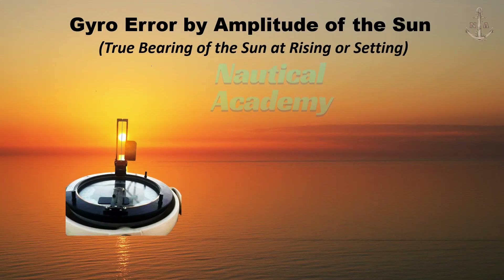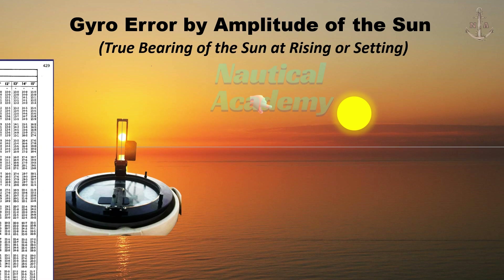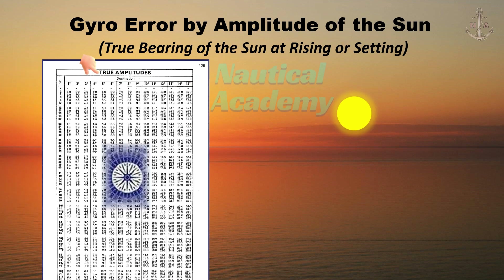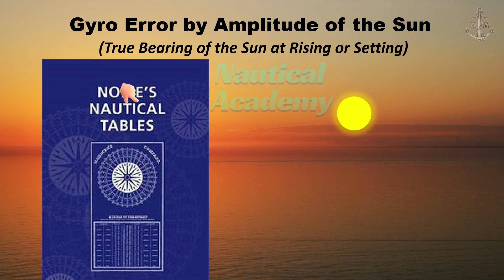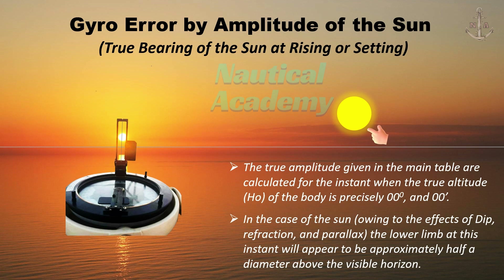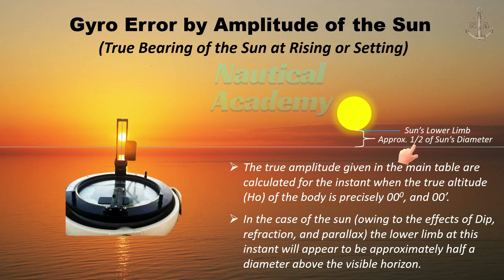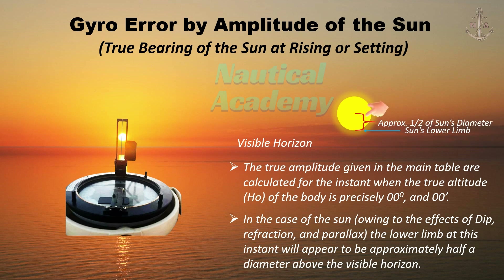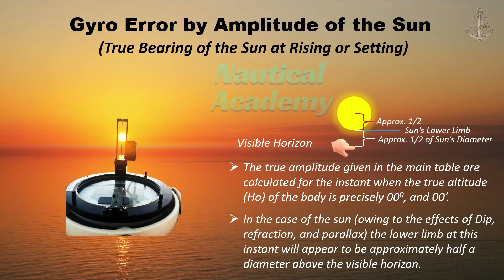When taking the compass bearing of the sun at sunrise or sunset, and if you are using the amplitude and correction tables which can be found in Norie's Nautical Tables, the true amplitude given in the main table are calculated for the instant when the true altitude of the body is precisely zero degrees and zero minutes. In the case of the sun, owing to the effects of dip, refraction, and parallax, the lower limb at this instant will appear to be approximately half a diameter above the visible horizon. The optimal time to take the compass bearing is when the sun's lower limb is at this distance above the visible horizon.